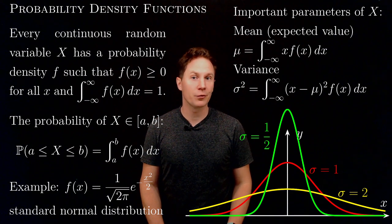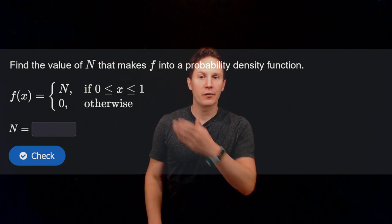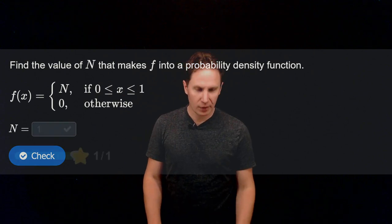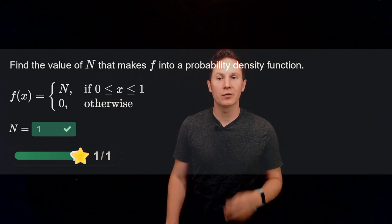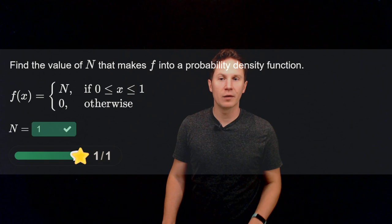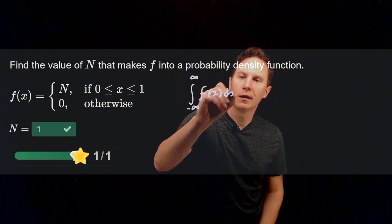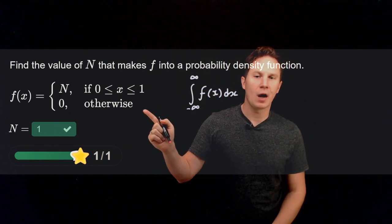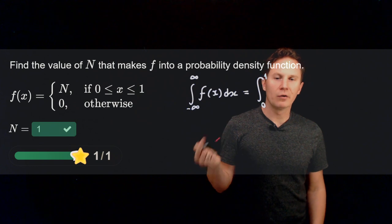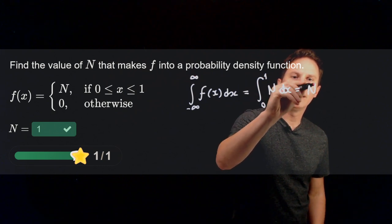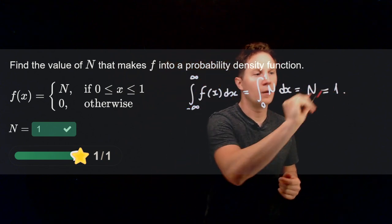With these notions in place, let's solve some problems. Find a value N that makes f into a probability density function. For this function to be a PDF it must be non-negative, so N must be non-negative, and the integral from negative infinity to infinity must equal 1. Since f is zero outside the interval from 0 to 1 and equals N inside it, that integral is simply N, so N must equal 1.